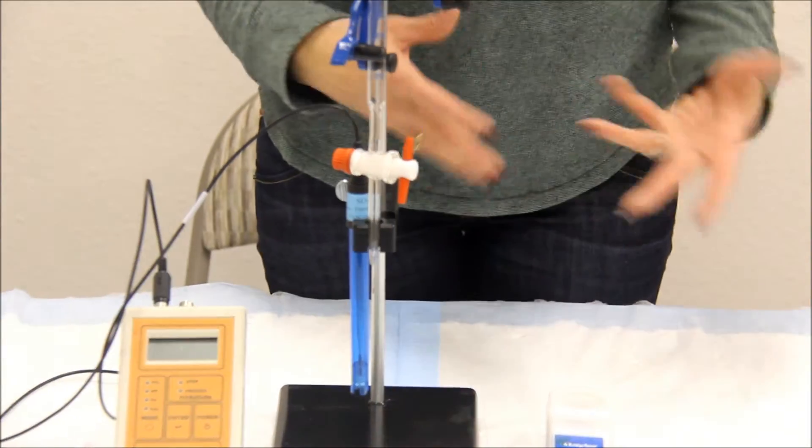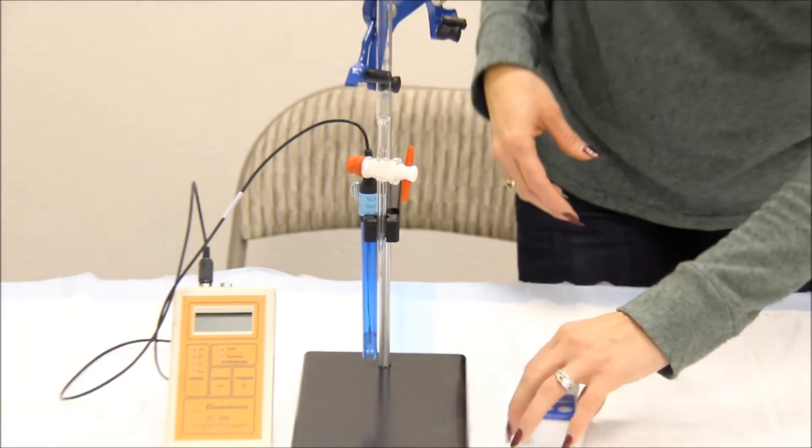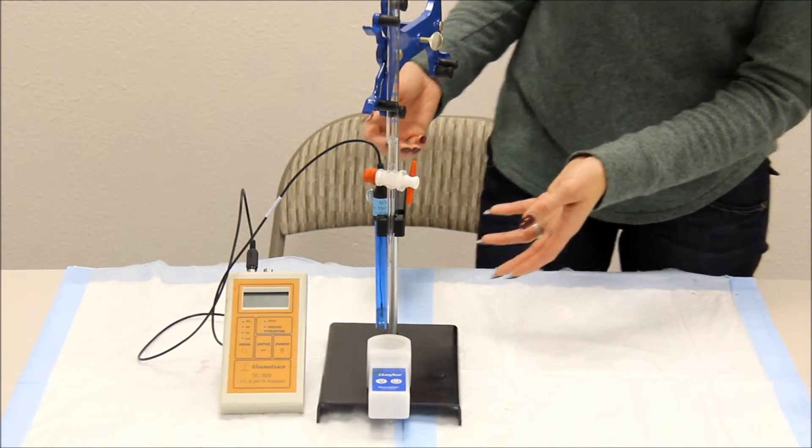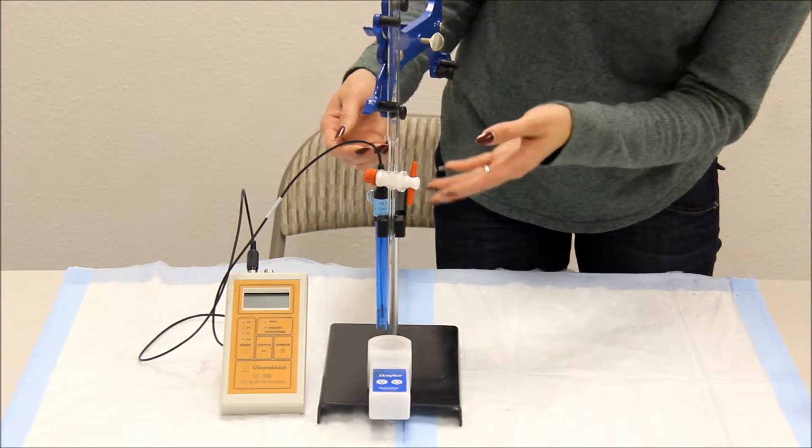You are now ready to add your wine samples. You may need to adjust the height of your electrode holder and burette clamp.